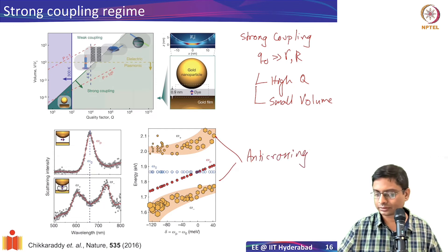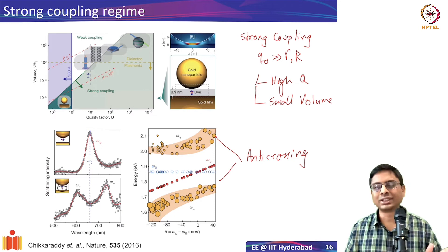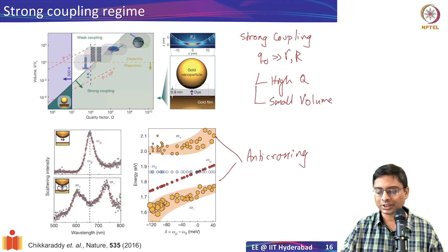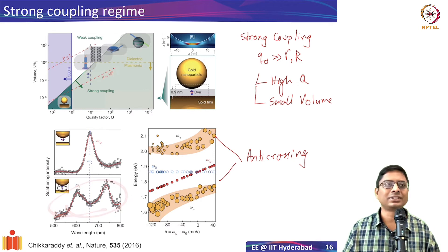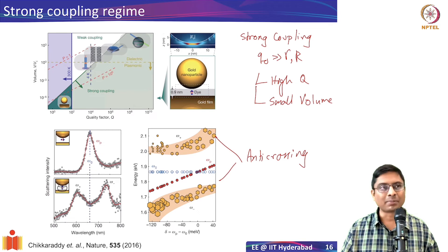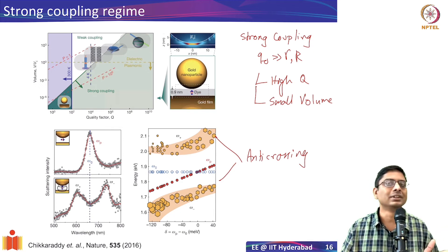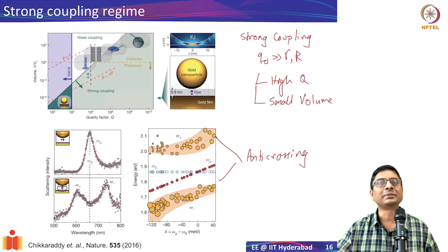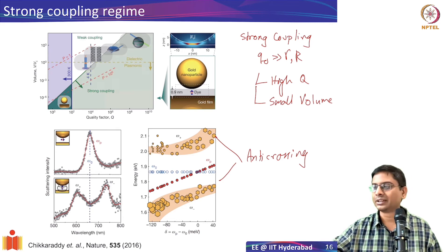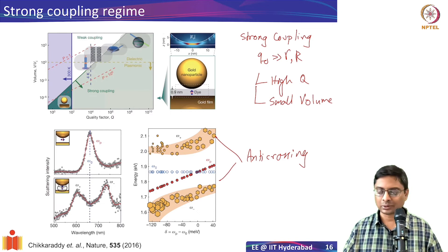The key message is that you will have splitting of energy levels. Even in a plasmonic antenna coupled to a gold film — which acts as a cavity — when it interacts strongly with the dye, the system scatters differently, exhibiting two peaks. This strong coupling regime is very useful for controlling light-matter interaction at the nanoscale.